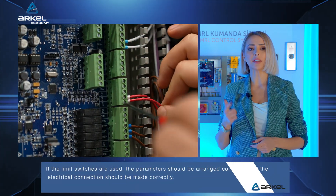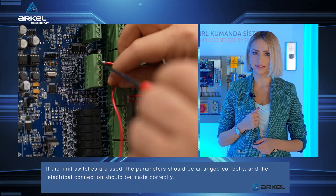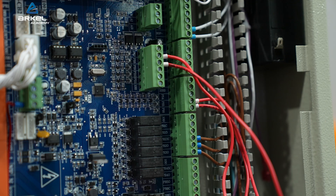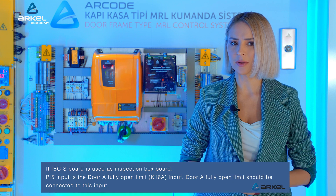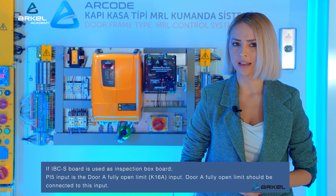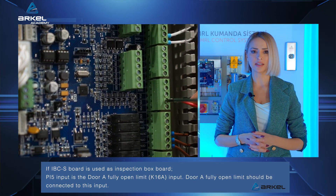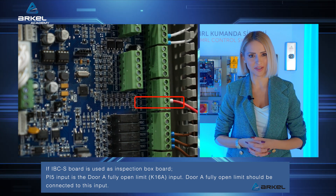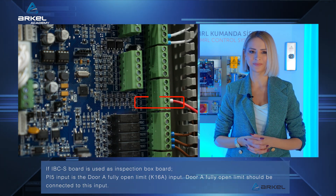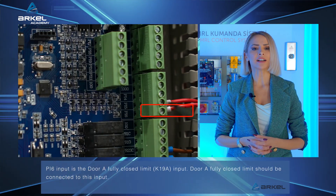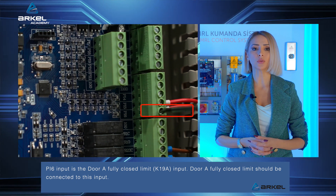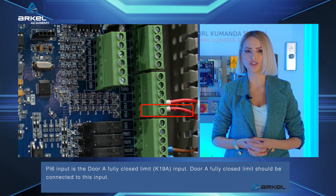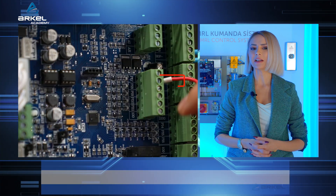If the limit switches are used, the parameters should be arranged correctly and the electrical connection should be made correctly. If the IBCS board is used as inspection box board, PI5 input is the door A fully open limit (K16A input) — door A fully open limit should be connected to this input. PI6 input is the door A fully closed limit (K19A input) — door A fully closed limit should be connected to this input.